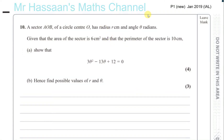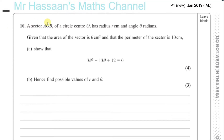Question number 10 from P1, January 2019, International A-Level. Sector AOB of a circle, center O, has a radius of r centimeters and an angle theta radians. Given that the area of the sector is 6 centimeters squared and the perimeter of the sector is 10 centimeters, show that 3 theta squared minus 13 theta plus 12 equals 0.